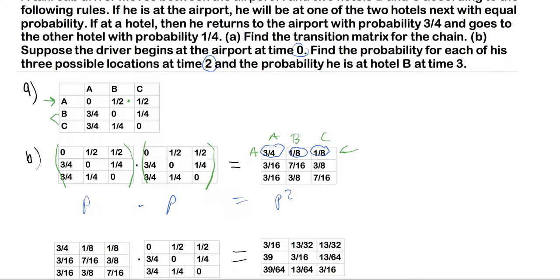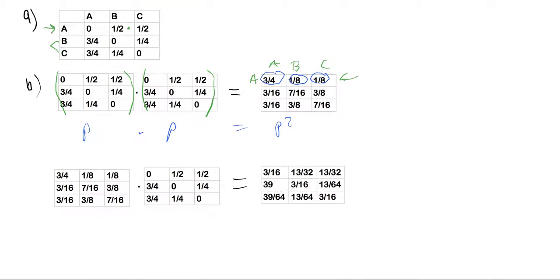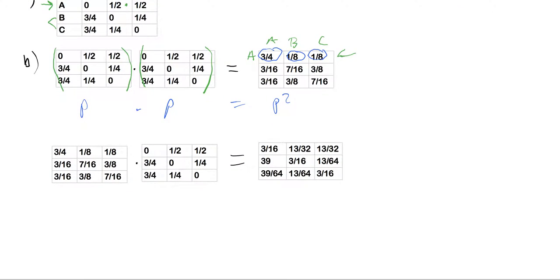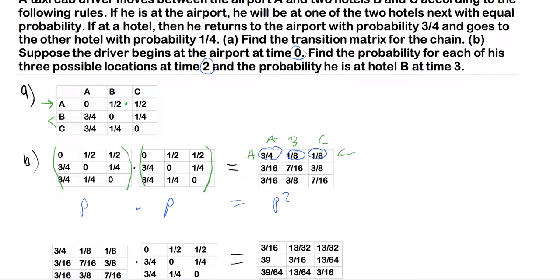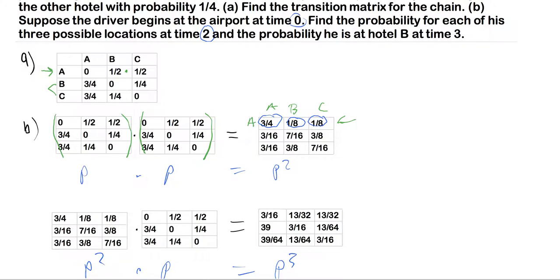So then moving on to the second part of B, the probability he is at hotel B at time three, what we want now, similarly, we want our transition matrix to the third. We're taking the third step. So this is our second step times another one to give us the third step. And that's how we're going to equate what the probability is he's at hotel B at time three. So again, each of his three possible locations at time two, the probability is at hotel B at time three.